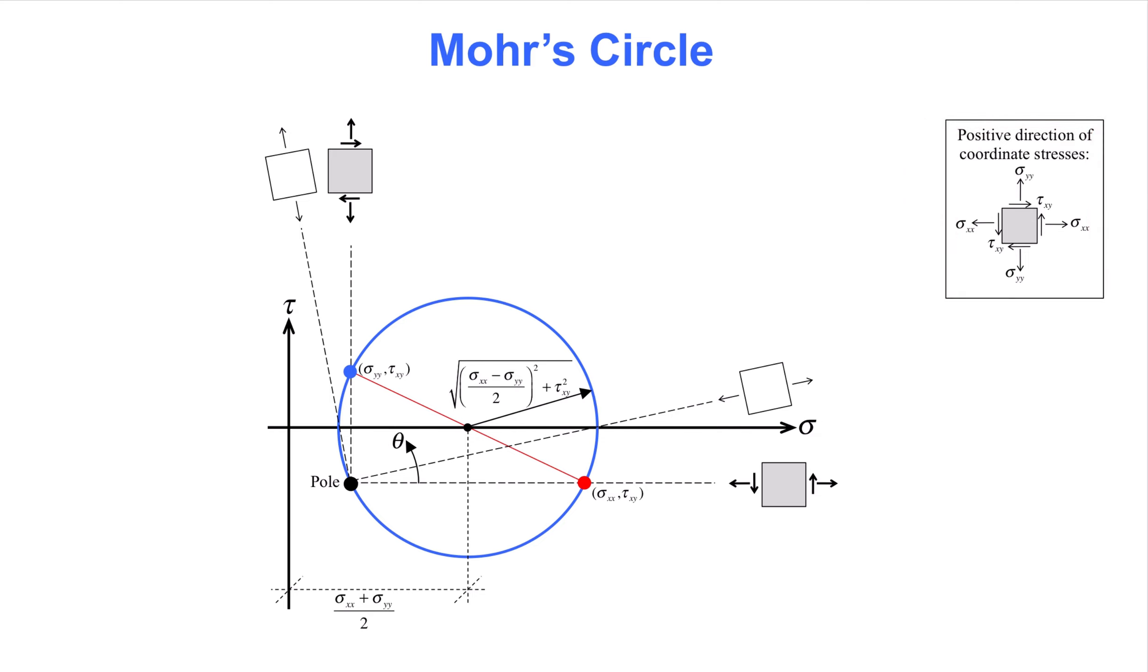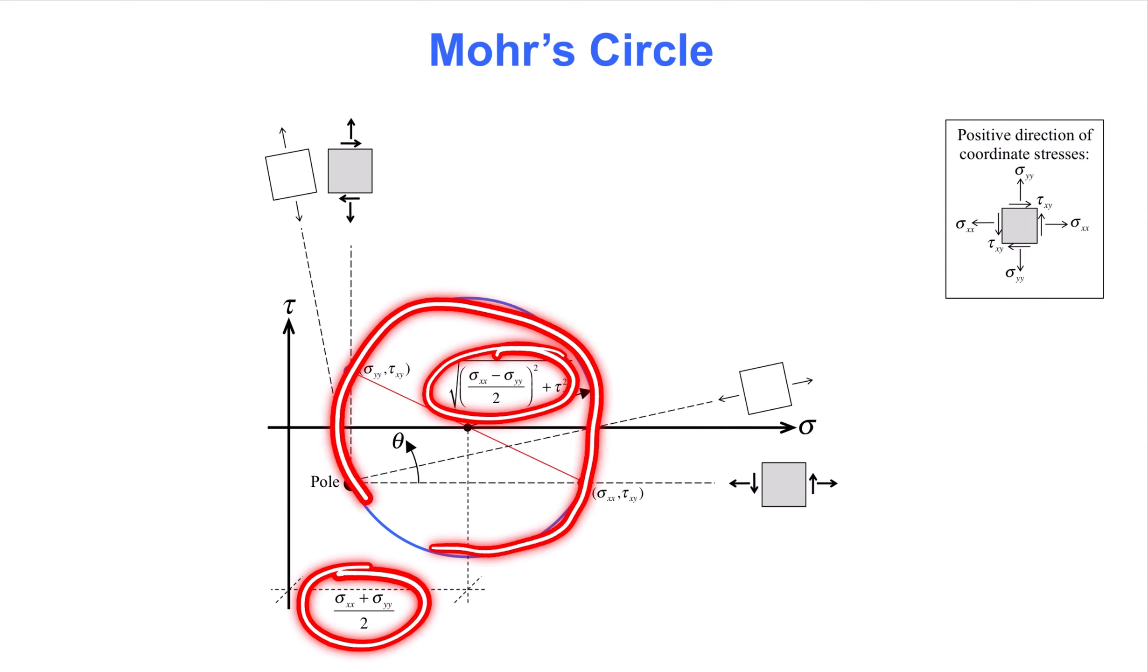Next, calculate the radius and center shift of the circle. The expressions were given on the previous slide. Draw Mohr's circle with the calculated radius and center shift, shown as a blue line.